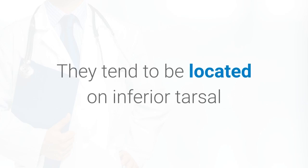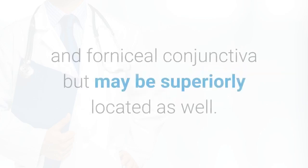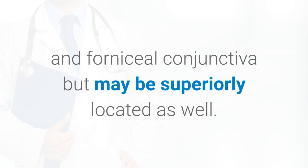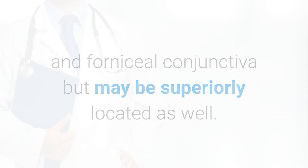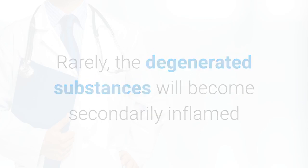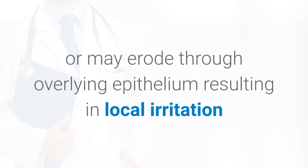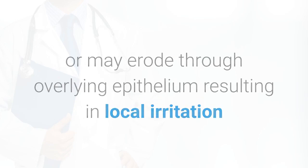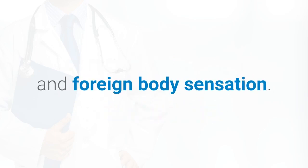They tend to be located on inferior tarsal and fornicial conjunctiva but may be superiorly located as well. Rarely, the degenerated substances will become secondarily inflamed or may erode through the overlying epithelium, resulting in local irritation and foreign body sensation.